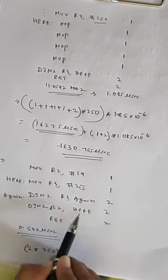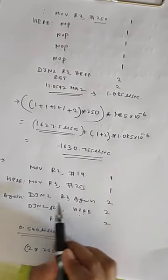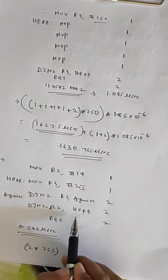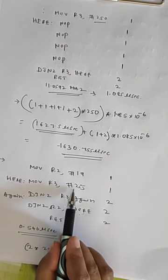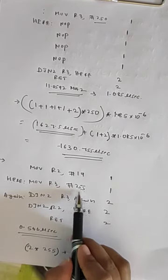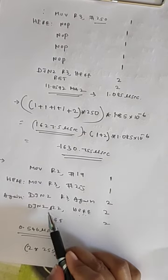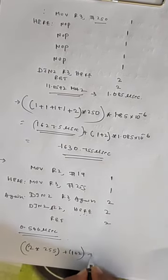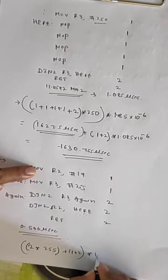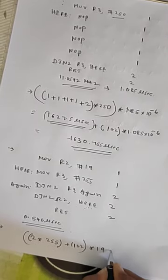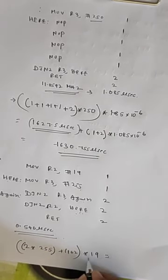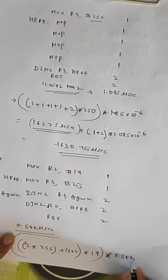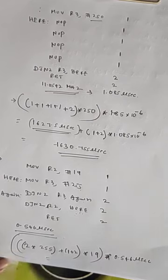For the outer loop, we consider MOV R3, #255 taking one machine cycle and DJNZ R2 taking two machine cycles. These instructions, along with the inner loop, repeat 19 times. Multiplying: (2×255 + 1 + 2) × 19 × 0.546 microseconds gives approximately 5.321 milliseconds.